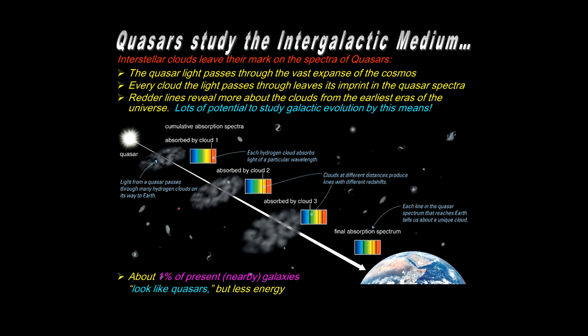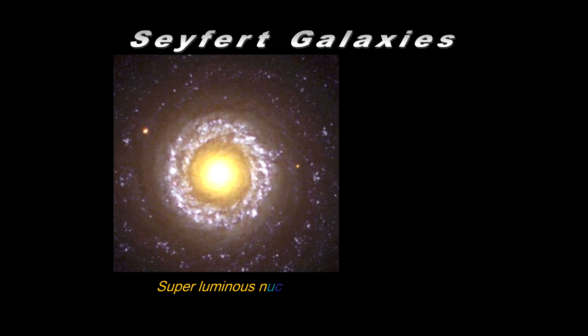And about one percent of nearby galaxies have emissions that look similar to quasars, but less energetic than the quasars themselves. And these are the Seyfert galaxies. Seyfert galaxies have a very luminous and small nucleus. You'll notice in this image if I asked you what's one difference between this image and other galaxy images you might have seen, you might say, it looks like the core of that galaxy is extra bright, and you would be right.